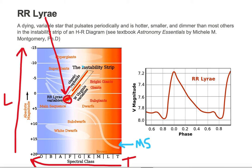They're in a region known as the instability strip, which is this rectangular region just above and to the right of the main sequence.